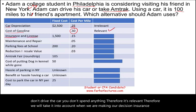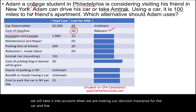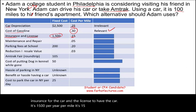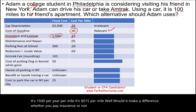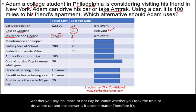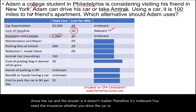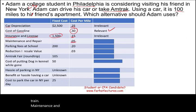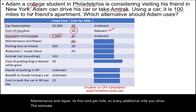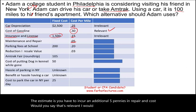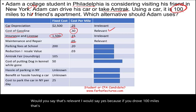Insurance and license for the car is $1,500 per year, or 15 cents per mile. Whether you take the train or drive, you need the insurance regardless — so it's irrelevant. Maintenance and repair is 5 cents per mile. Every additional mile driven incurs an estimated five cents in repair costs. Since driving 100 miles changes this cost, it is relevant.